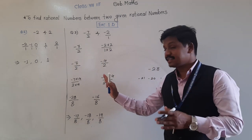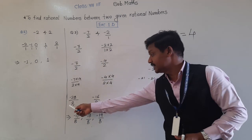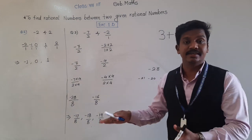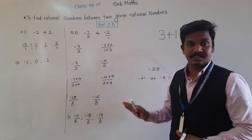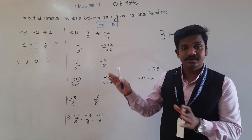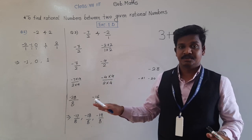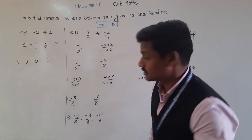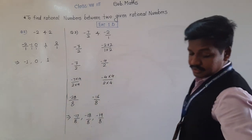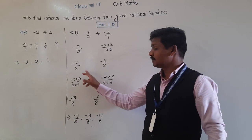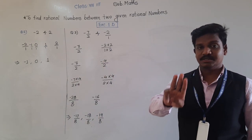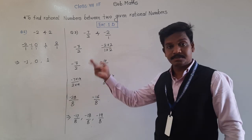Remember, students: since there are infinitely many rational numbers between any two, your answer can vary from this answer or the answers given in the back of the book. Everyone's answer can be different. That is why we multiply by n+1 when we need to find n rational numbers.